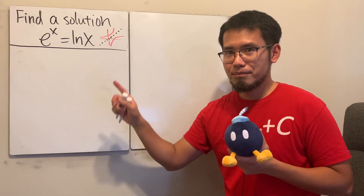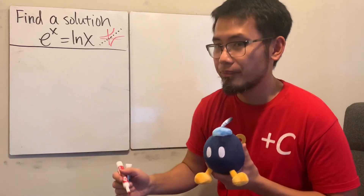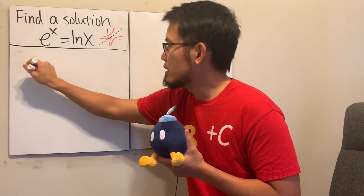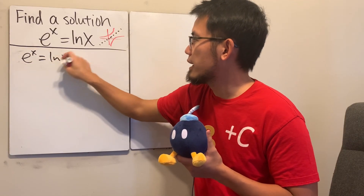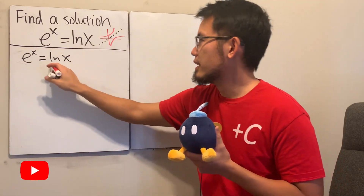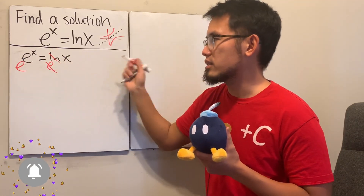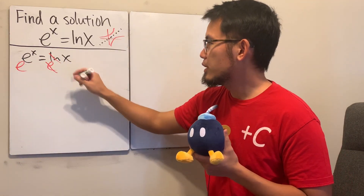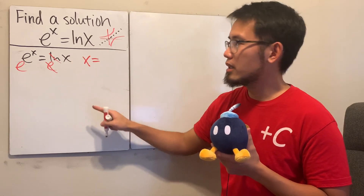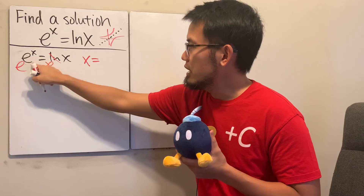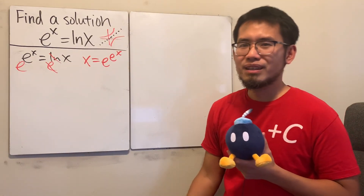Hopefully you guys had a chance to try it. Here we go — let's see how we can do this. Start with e to the x equals ln(x). Then I'm going to take e of both sides, so this and that will cancel, and you will see that x has to be equal to e to the e to the x.